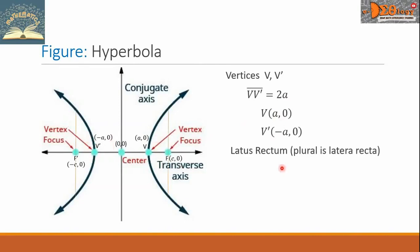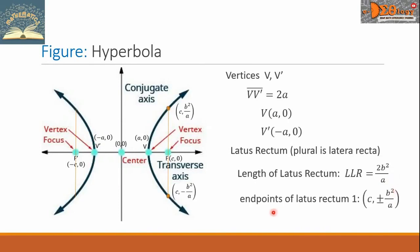Now, the latus rectum. There are two latera recta. The length of each latus rectum denoted by LLR equals 2B² over A. So, the endpoints of the first latus rectum have coordinates (C, B²/A) and (C, -B²/A) respectively.